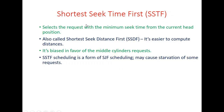The next algorithm is shortest seek time first (SSTF). It selects the request with minimum seek time from the current head position, also called shortest seek distance first algorithm. It is easier to compute distances. This algorithm is biased in favor of middle cylinder requests, and is a form of shortest job scheduling. It may cause starvation to some IO requests.